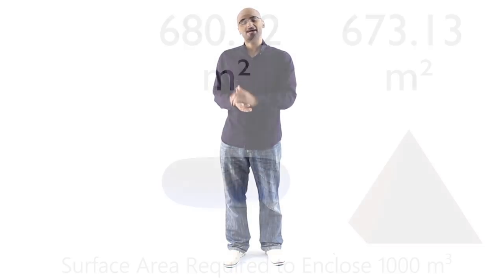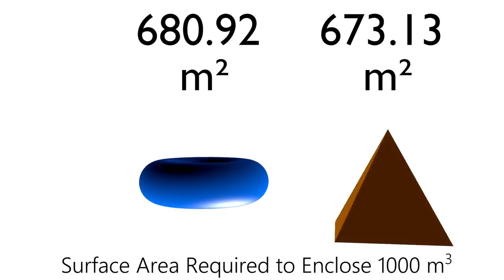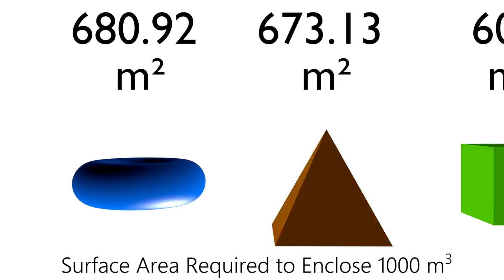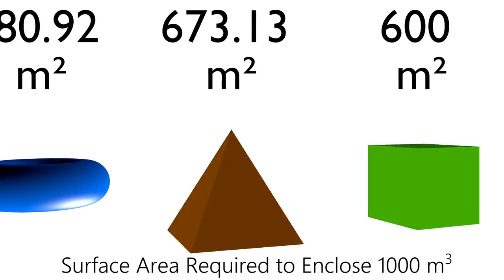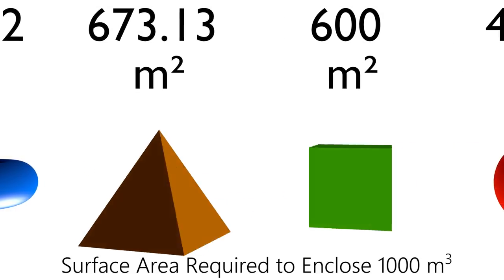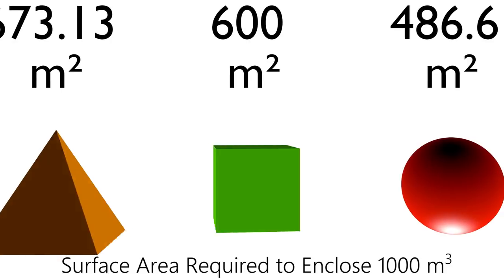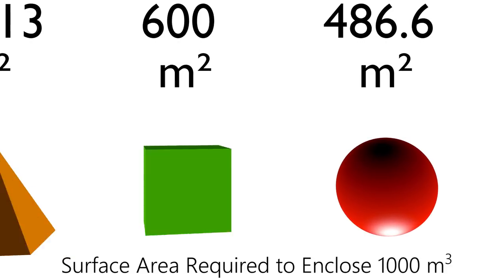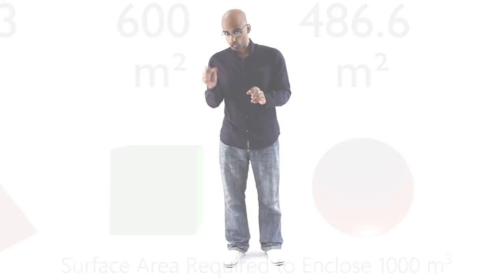Now, before we move on, it is important for us to understand why the universe seems to like spherical objects so much. There's a reason for that, of course, and that is because a sphere is the most efficient three-dimensional shape out of all the possible three-dimensional shapes. It requires the least surface area to enclose a particular volume. Go ahead and try it yourself. Here is, let's say, around a thousand cubic meters. I want you to find a three-dimensional shape that can enclose this volume and has less surface area than that of a sphere. You will soon go mad because you realize that this is an impossible thing to do, so good luck.